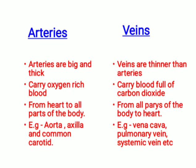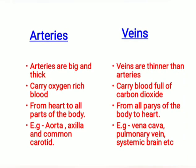Now let's see the difference between arteries and veins. Arteries are big and thick whereas veins are thinner than arteries. Arteries carry oxygenated blood — that is, oxygen-rich blood — whereas veins carry blood full of carbon dioxide. Arteries carry blood from the heart to all parts of the body; veins carry blood from all parts of the body back to the heart.